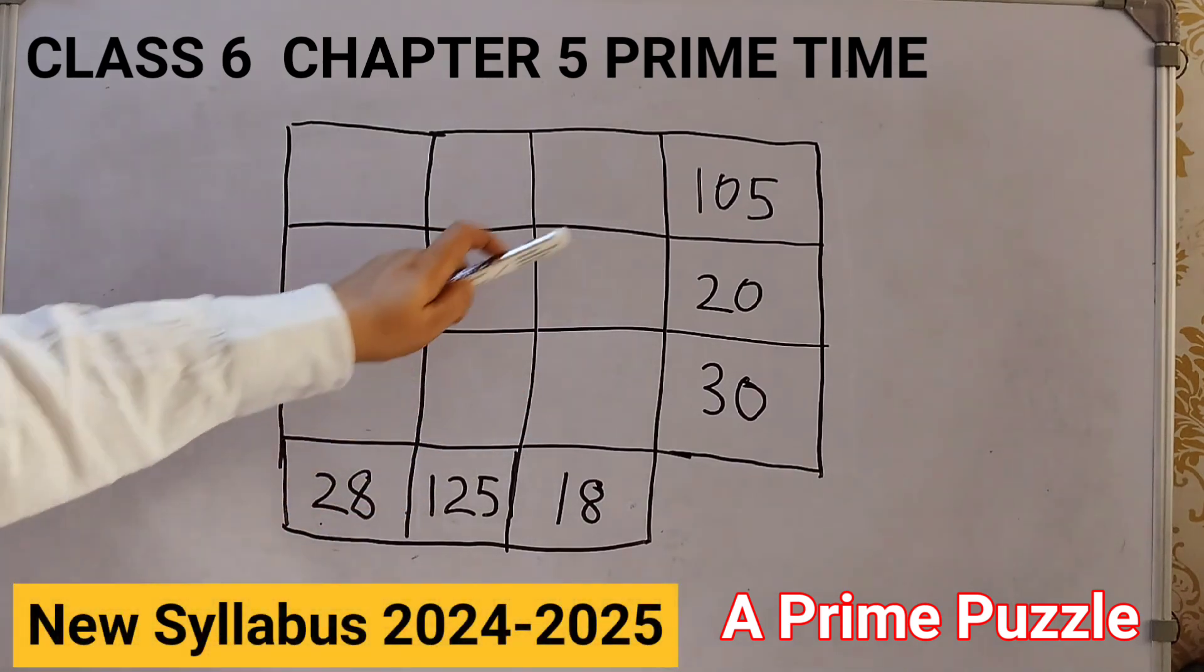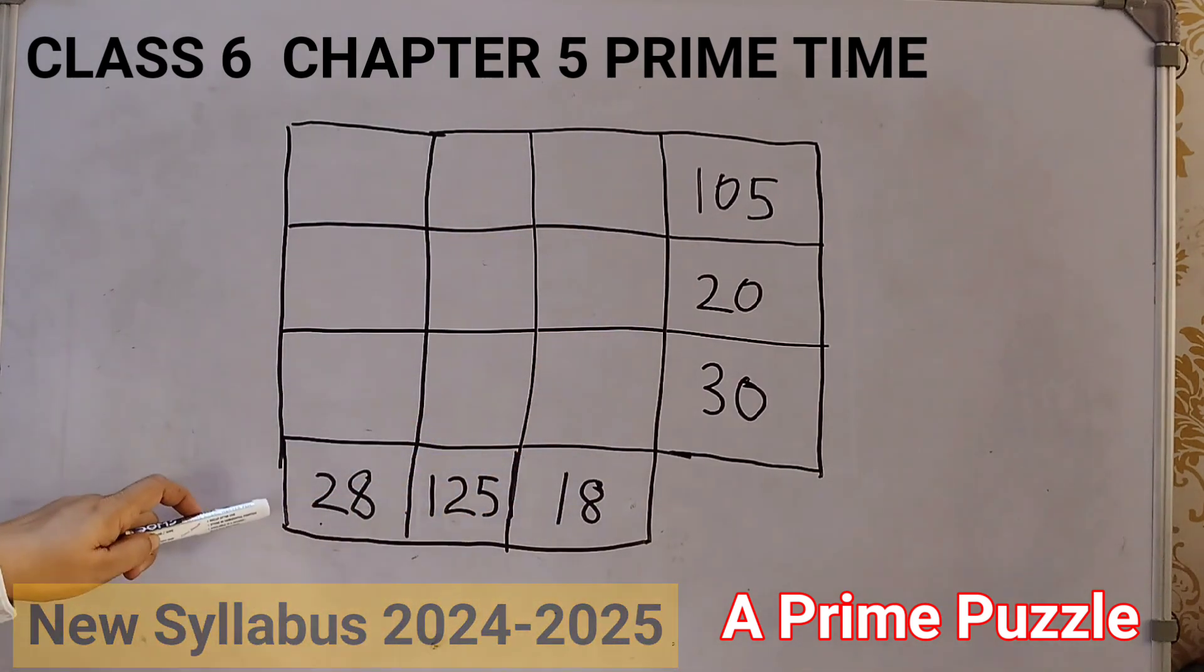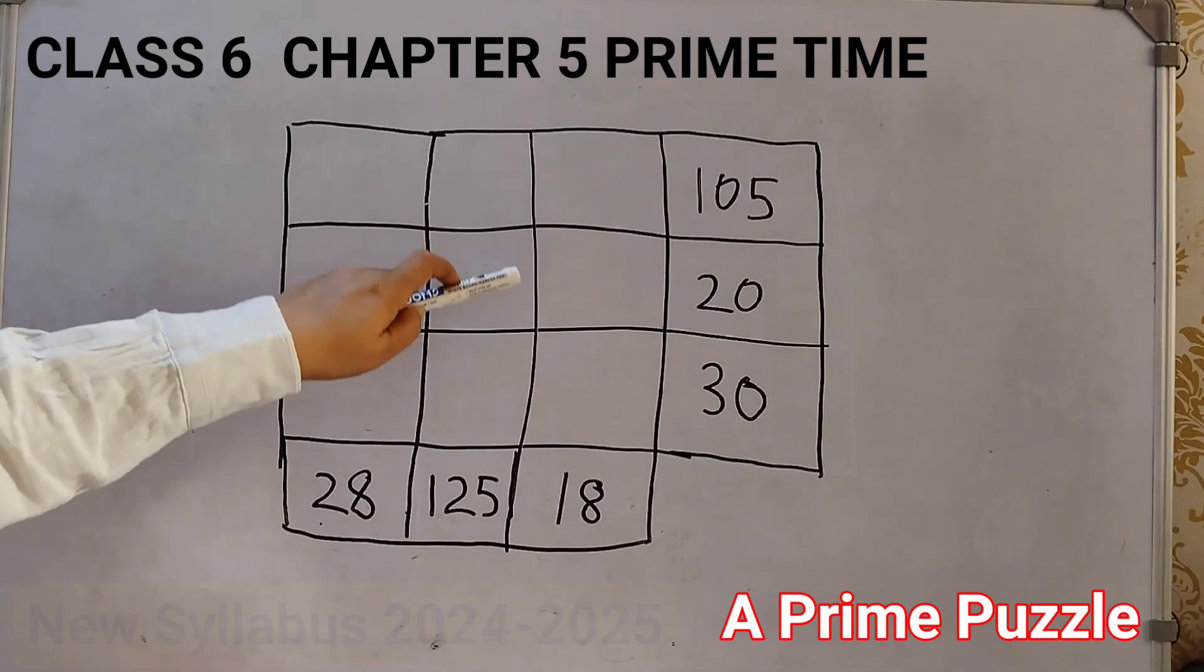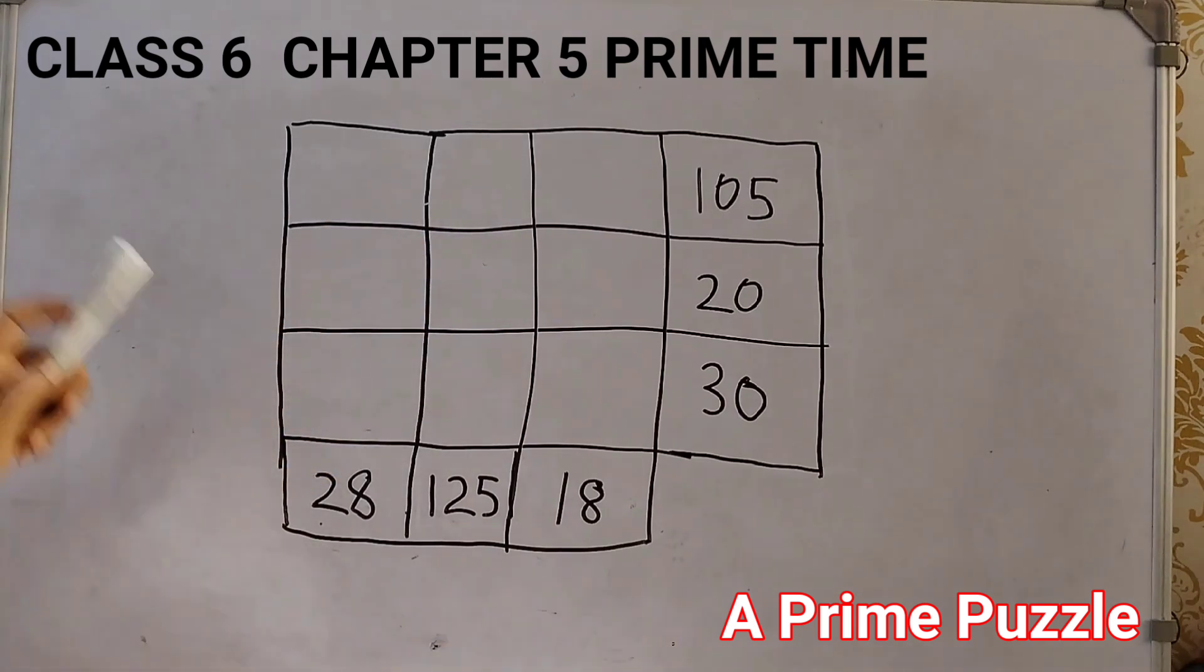Here we have a grid, some numbers are given here. And we need to fill up these grids with the numbers. But the rule is that it should be all filled with prime numbers. Prime numbers like 2, 3, 5, 7, we have learned about prime numbers.